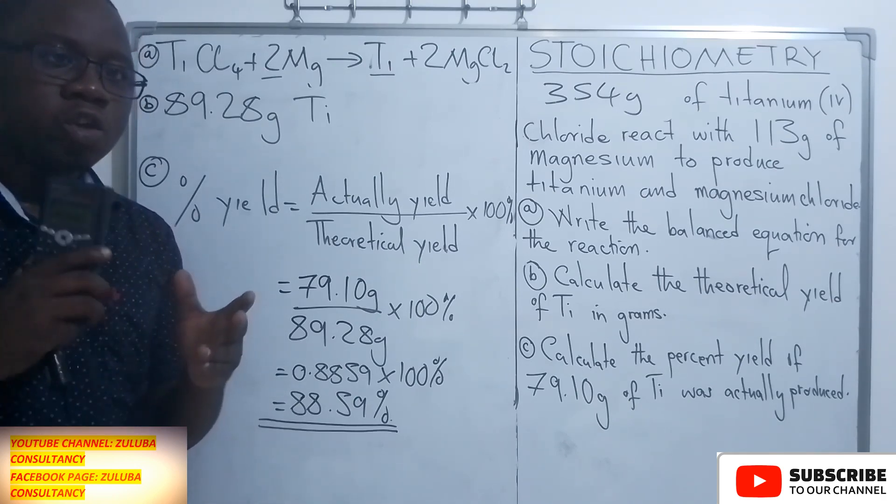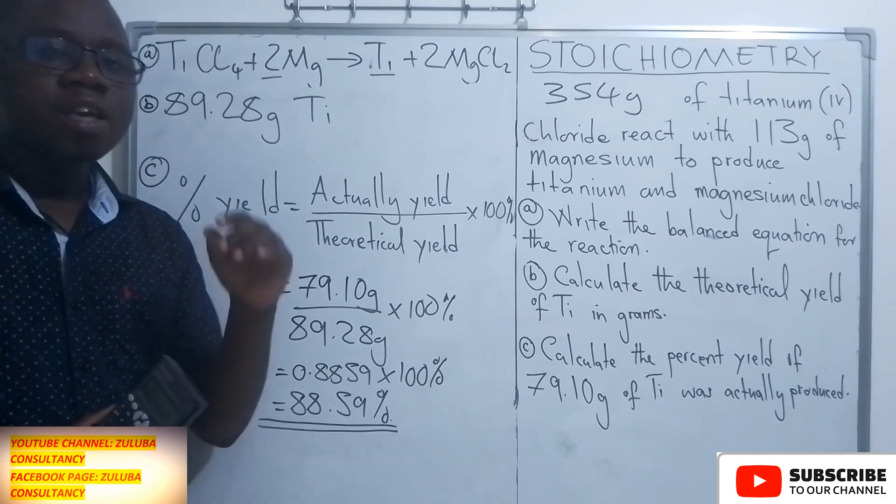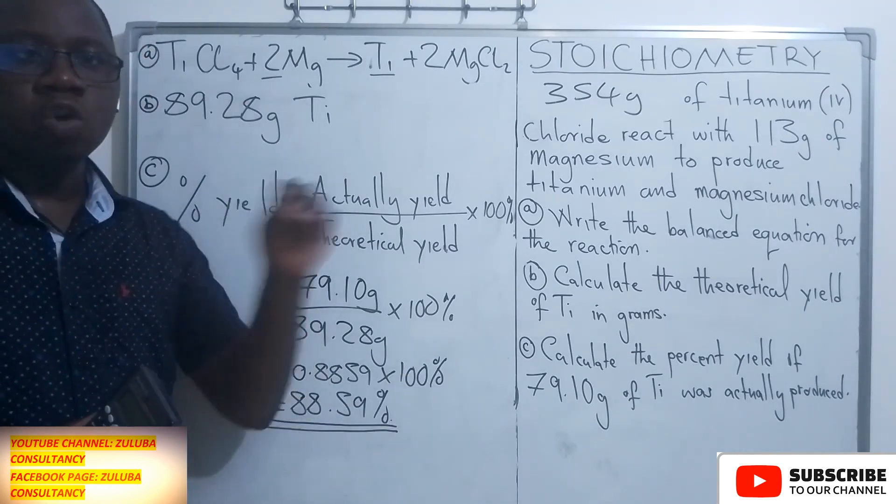Then identify the correct limiting reaction. Thereafter, you can identify the percentage yield.